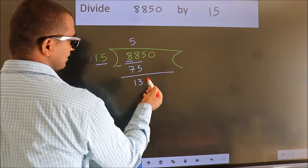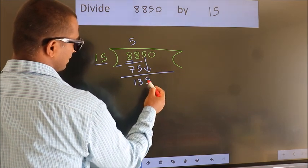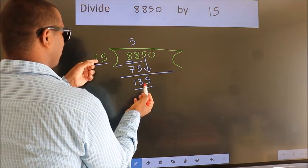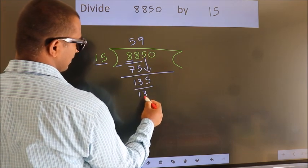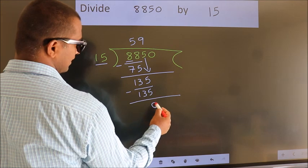After this, bring down the beside number. So 5 down. So 135. When do we get 135? In 15 table, 15 nines, 135. Now we subtract. We get 0.